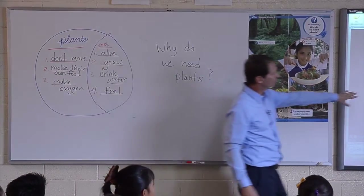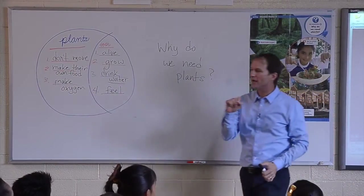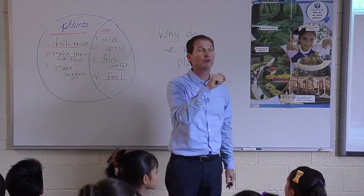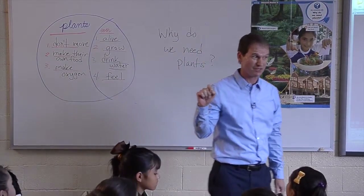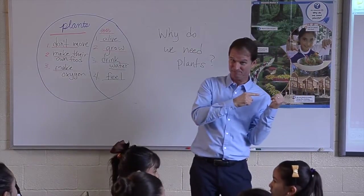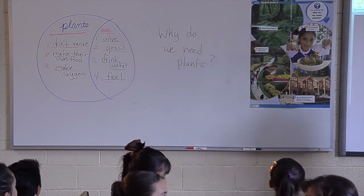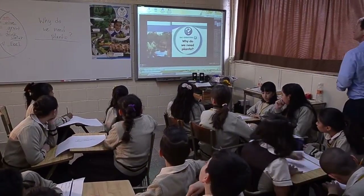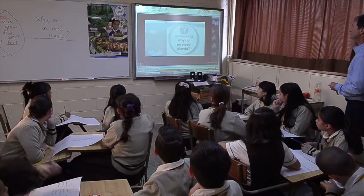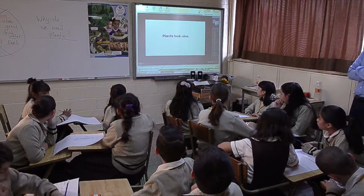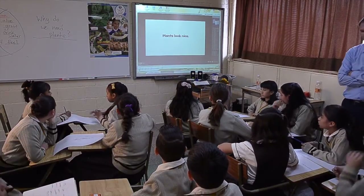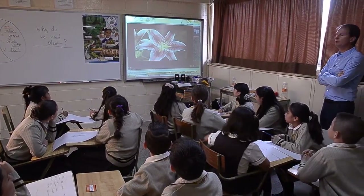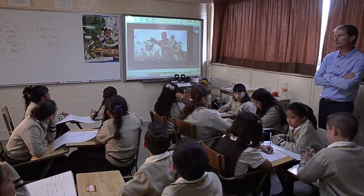I'm going to play it again and you can do three things: you can draw pictures, write words, or write full sentences. You can write anything that you see. Make sure you all have your pencils ready. Let's get started. Write down any words that come to your mind as you see this.